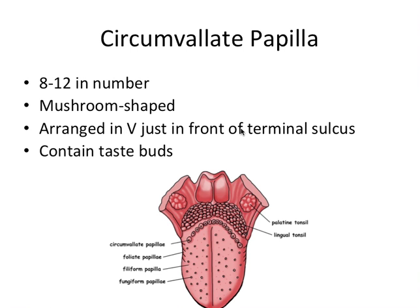The circumvallate papilla are probably the most prominent. They form the terminal sulcus we talked about before, arranged in a neat row of about 8 to 12 in number. They are definitely mushroom shaped and are the largest ones. They're arranged in a V technically just in front of the terminal sulcus, so these papilla can be considered part of the anterior two-thirds of the tongue. They also contain taste buds.